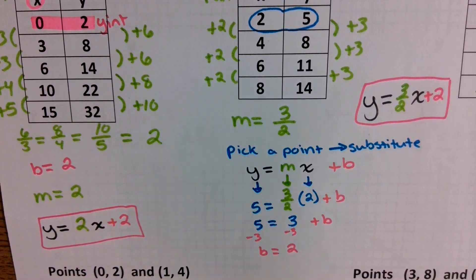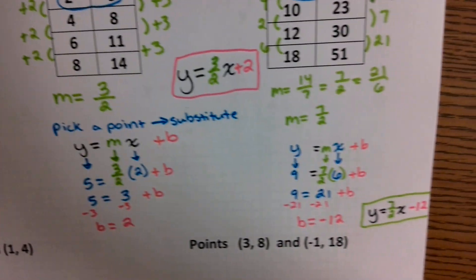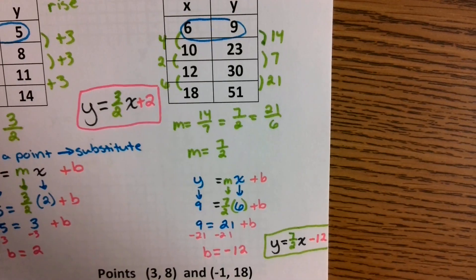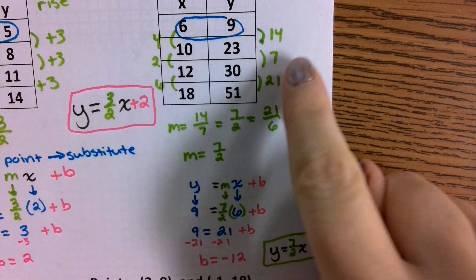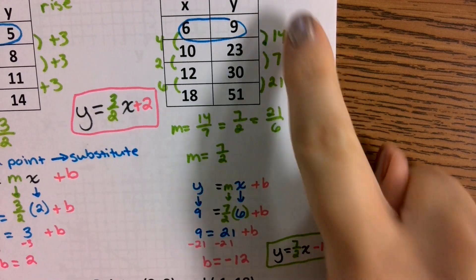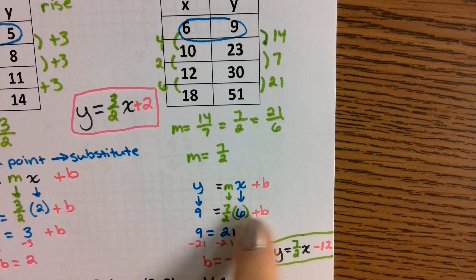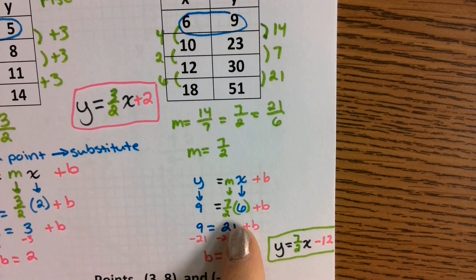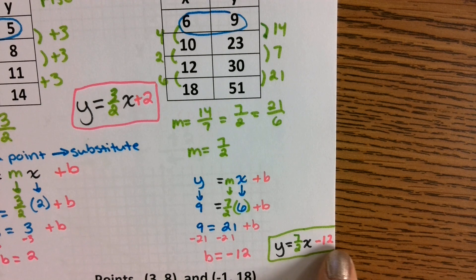Go ahead and do the other table on your own. You should have gotten y = 7/2 x - 12. Your slope is 14/4, or 21/6 — they all simplify to 7/2. I picked the point (6, 9) to plug in: 9 = 7/2 × 6 + b, which gives 9 = 21 + b, so b = -12. That's where y = 7/2 x - 12 comes from.